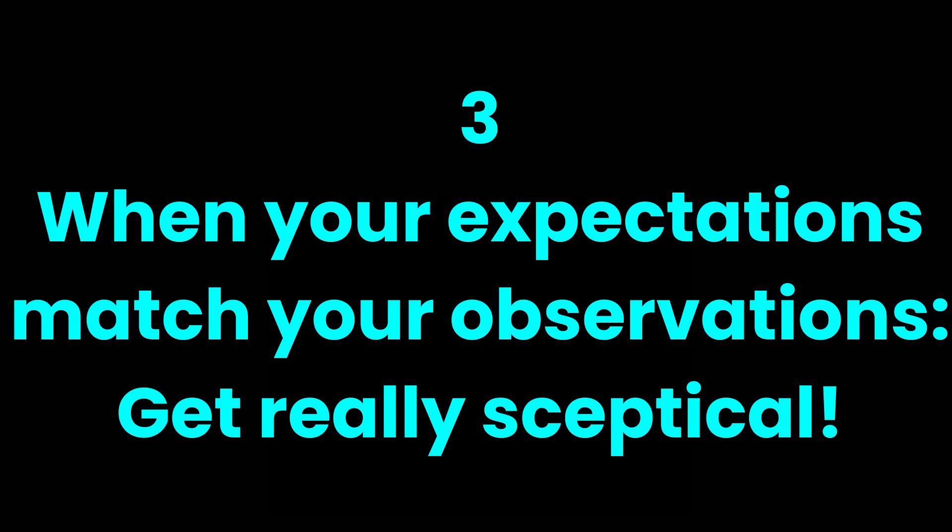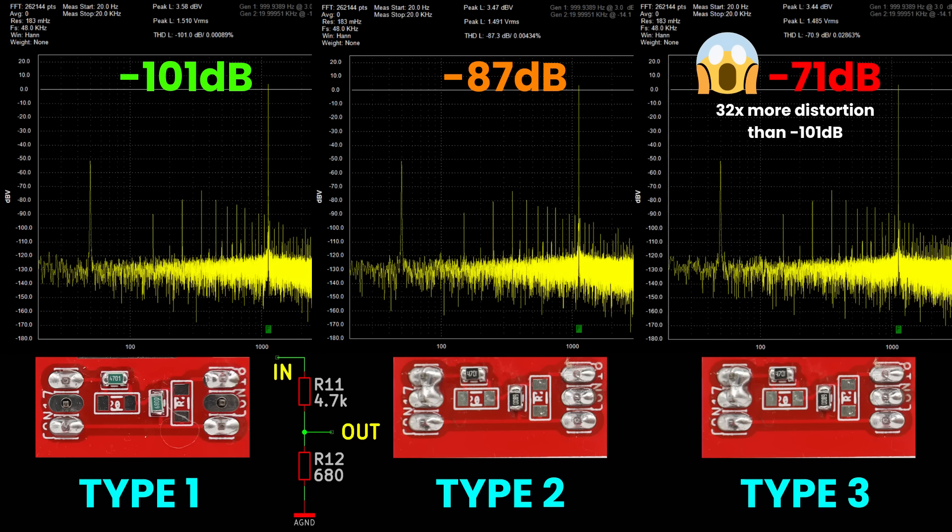So is this the end of the story? Not even close. There's another resistor distortion effect that can silently ruin your circuit. You could be using the best amplifier on the planet and still be stuck at minus 70 dB. Luckily, the fix is simple once you know it. Let me show you.